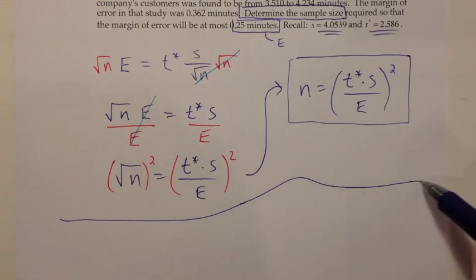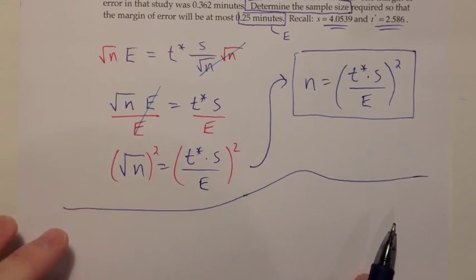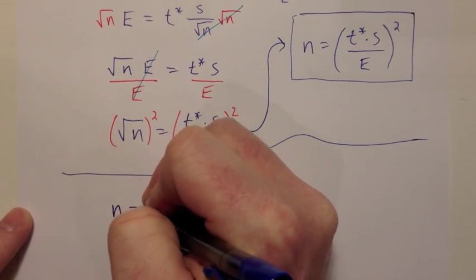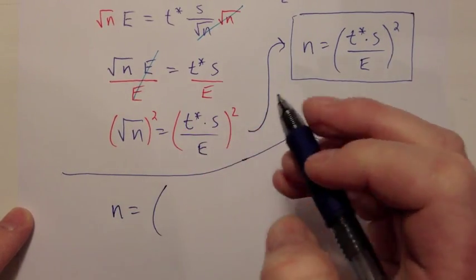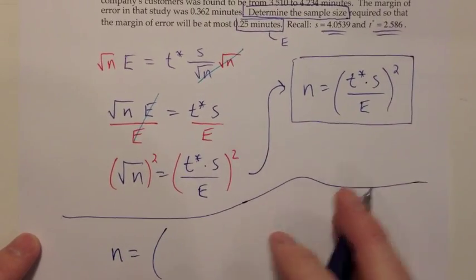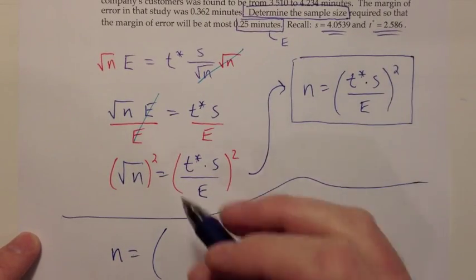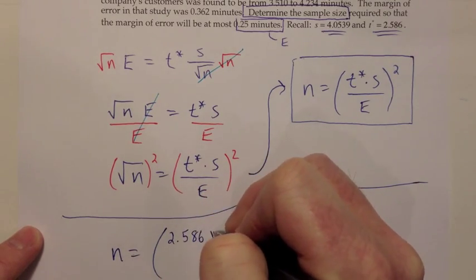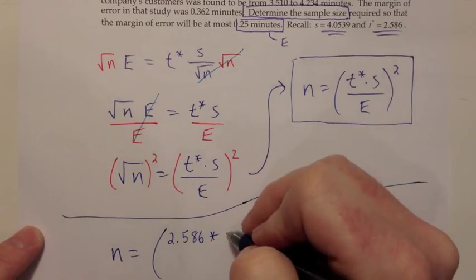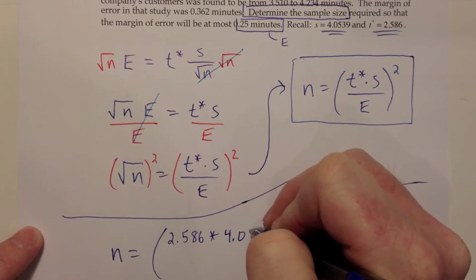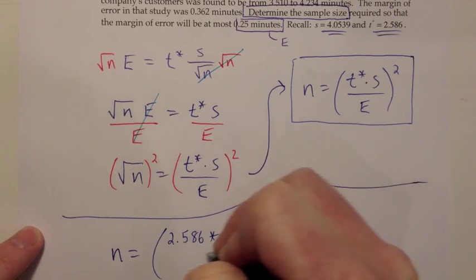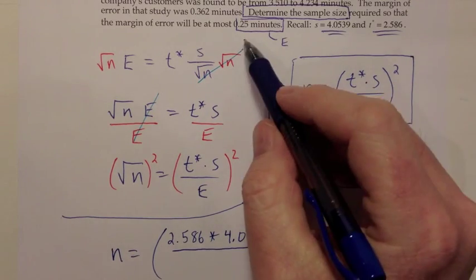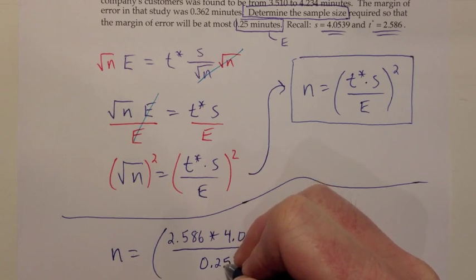Let me go ahead and break that off. There was the algebra that we only have to do just this one time. Now here's the work you'd show on the homework. N would be T-star, which we're reminded was 2.586. Then I would multiply that times the S, which we were given on that problem, of 4.0539. I would divide all of that by the margin of error that they want, a margin of error of at most 0.25 minutes.